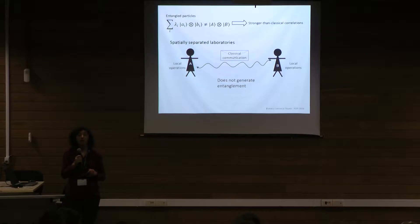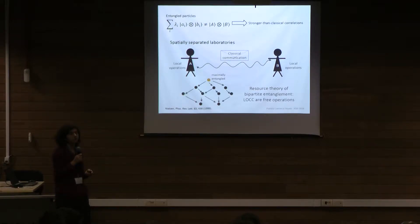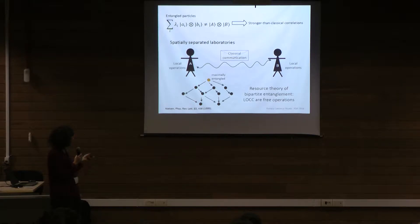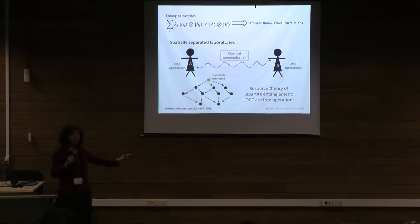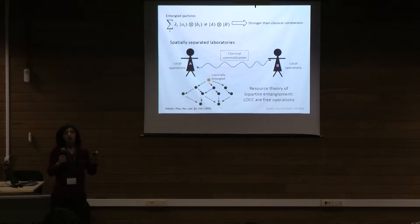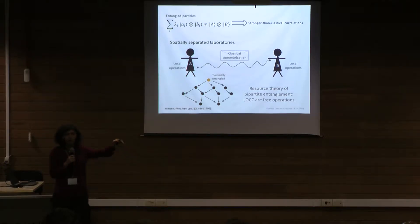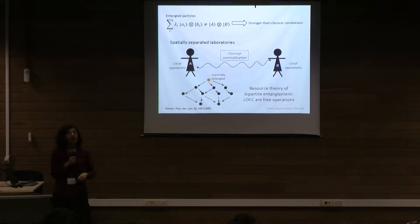The good news about bipartite entanglement is that this structure gives rise to a resource theory of LOCC. There is a maximally entangled state from which I can reach all others, so regardless of which state I need, if I'm given that one, I know I'll be okay. There's a very good characterization of when I can move from state psi to state phi — it has to do with majorization and it's all in Nielsen's paper.